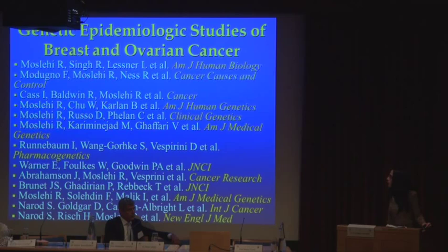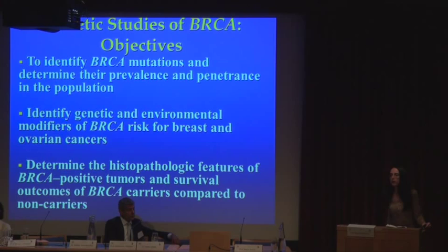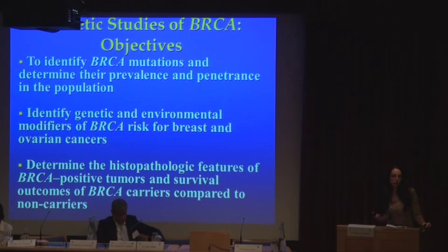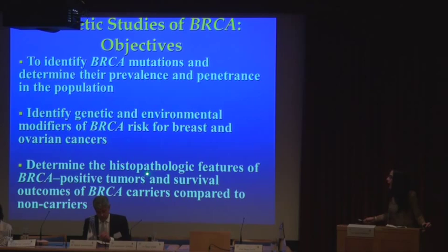The objectives of these studies have been several-fold. I'm going to focus on three. One is to identify BRCA mutations in each population and determine the frequency and penetrance — which is the risk of the mutation for given cancers — in that population. The second objective is to identify other genetic and environmental factors which may modify the risk associated with BRCA mutations for cancer. The third is to determine the histopathologic features of BRCA-positive tumors compared to sporadic tumors and to compare survival outcomes of BRCA carriers with breast and ovarian cancer.